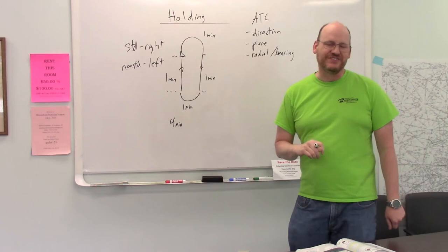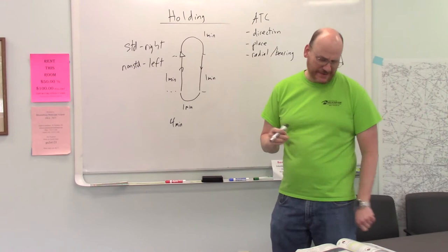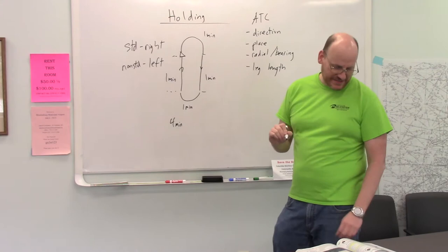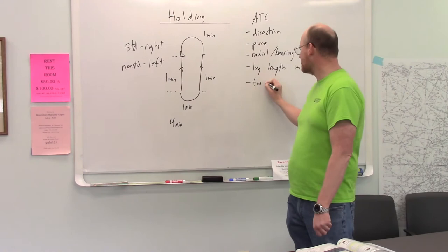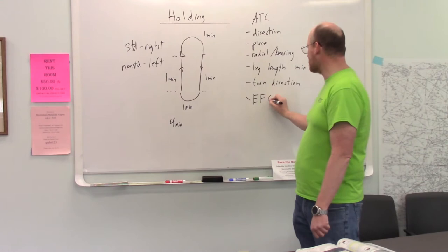That's a minor technical detail. If it's a radial, if it's a VOR, it could be a bearing, if it's some other kind of nav aid. Leg length, which is either going to be in minutes or miles. Also, direction of turns. And an EFC, expect further clearance time.